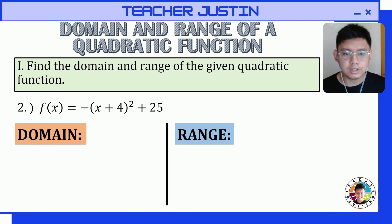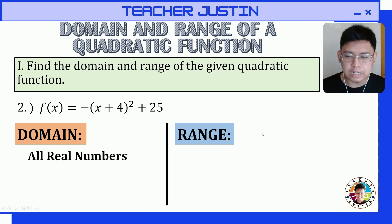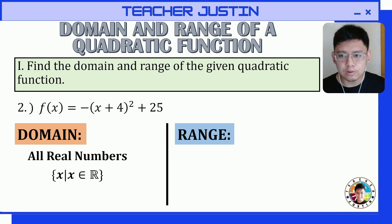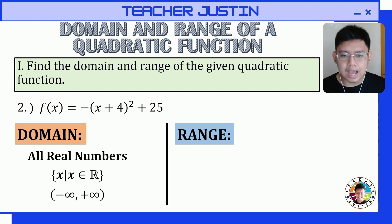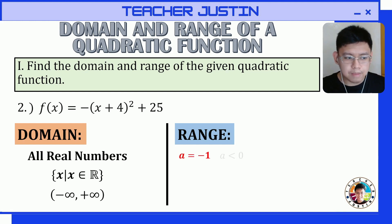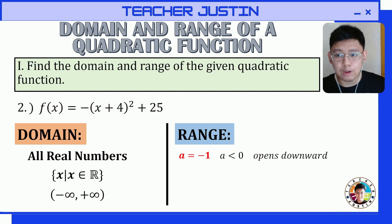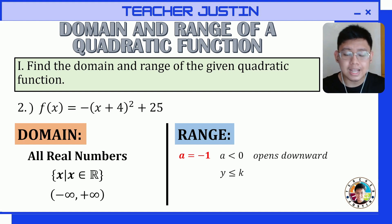Let's find the domain and range of f(x) = -(x+4)² + 25. The domain of our quadratic function will be all real numbers, so: x such that x is an element of real numbers, with interval from negative infinity to positive infinity. For the range, we identify the orientation of the graph. Here a is equal to negative 1, which is less than 0, so the parabola opens downward and the vertex is at the highest point.